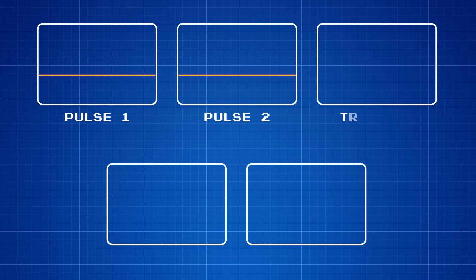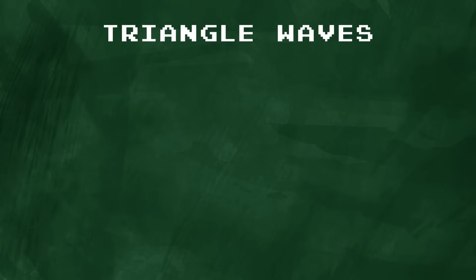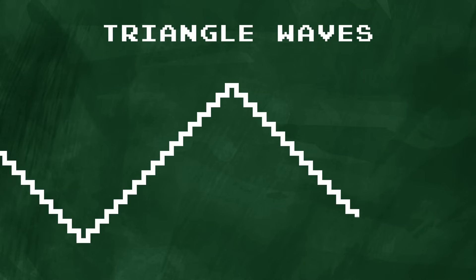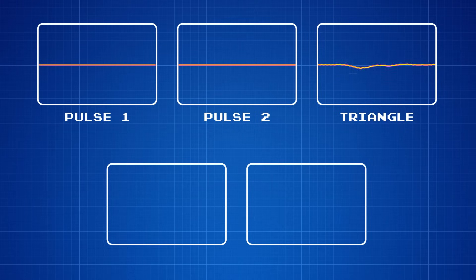Alongside the pulse channels, there's also a triangle wave channel. Rather than going straight up to a digital high, this wave steps up to a peak and then back down again, forming what looks like a triangle. This channel has a deeper and smoother tone than the pulse channels, making it great for playing the baseline of a tune.